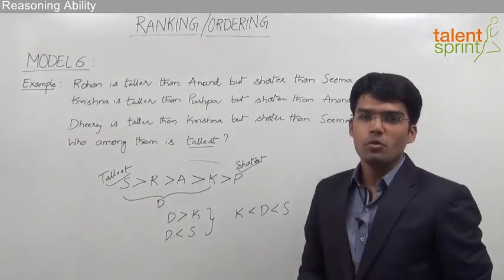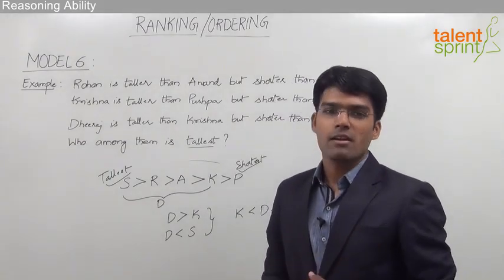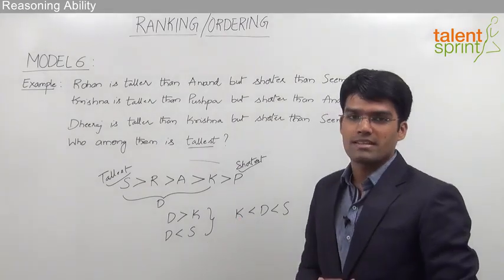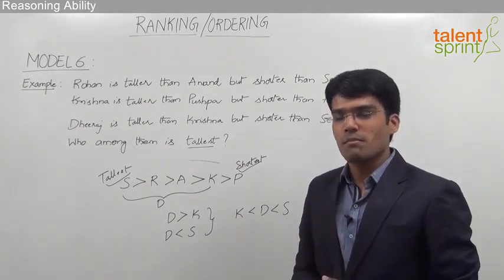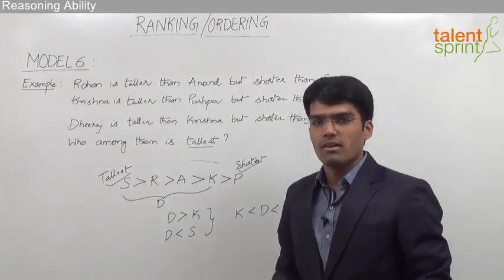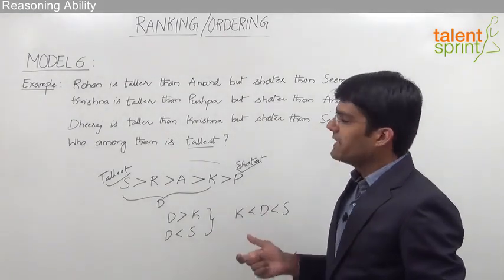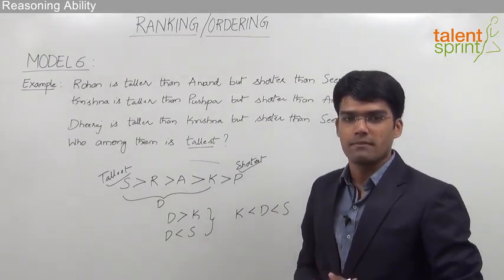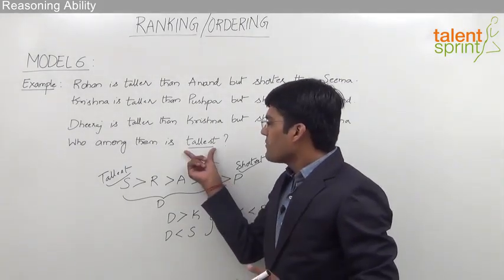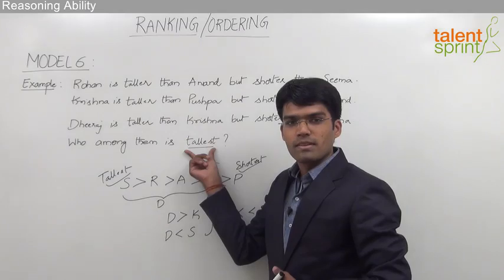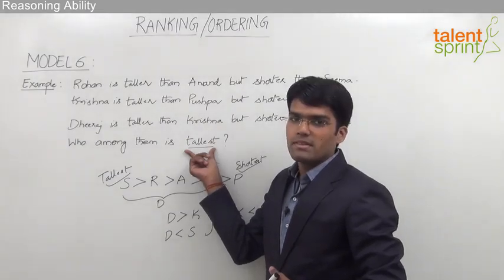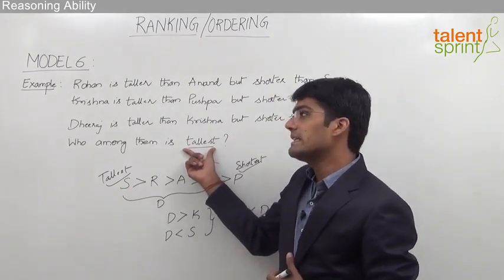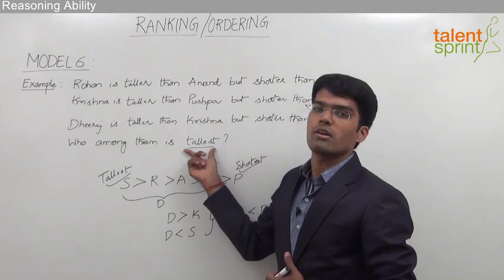As a Banker's Choice student with the Banker's Choice advantage, we cannot afford to spend so much time on such a simple problem. If you try to be smart, the same question can be solved within 5 to 10 seconds simply by finding out the wrong answers. Let's understand how to solve this question in a smarter way — we need to find the tallest person, so anyone who is shorter than someone else cannot be the answer.